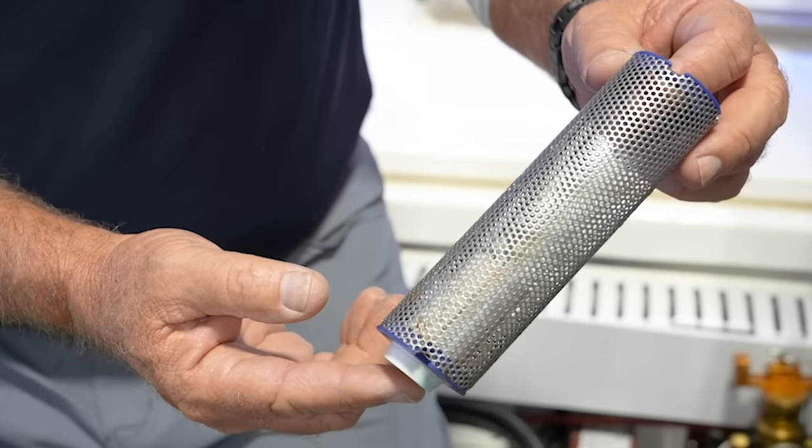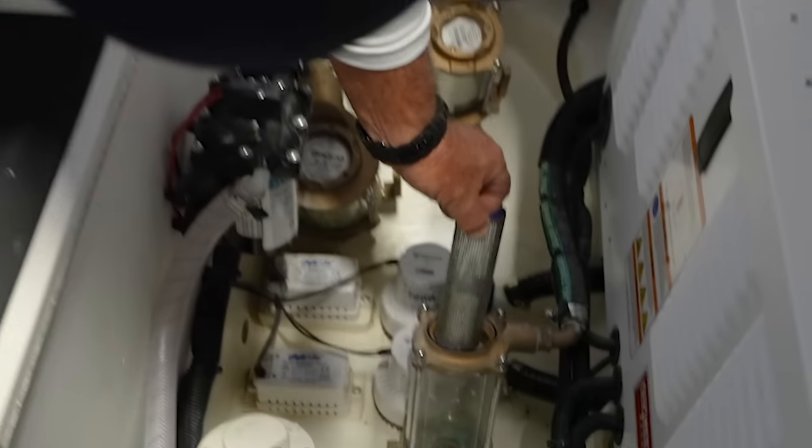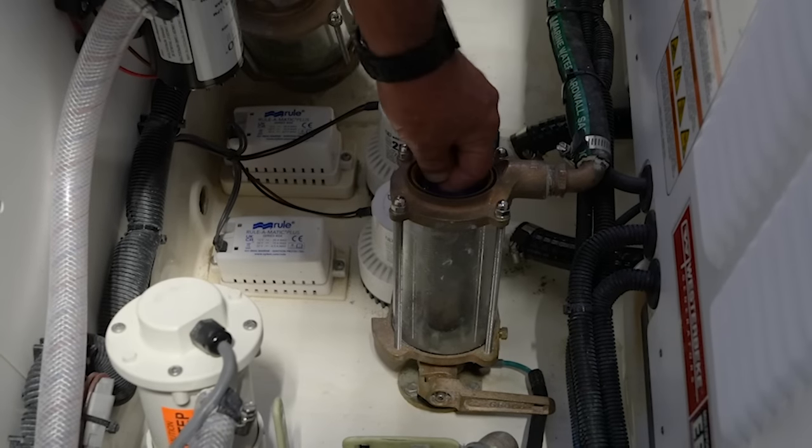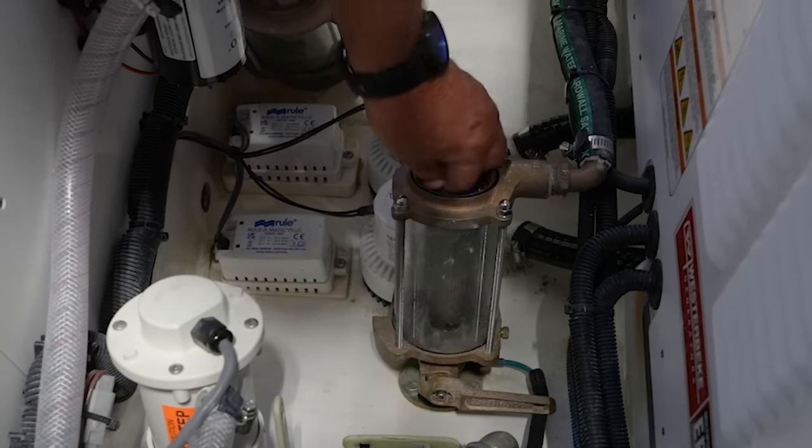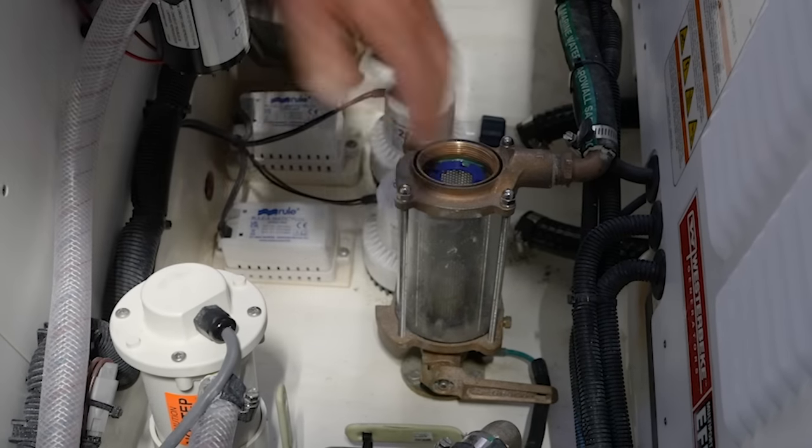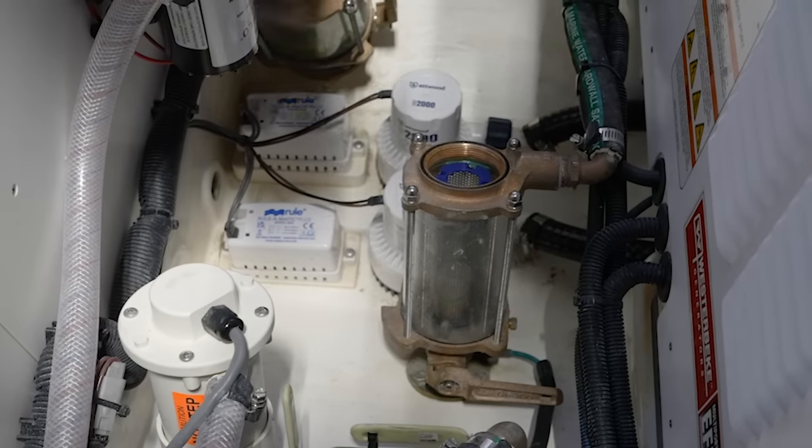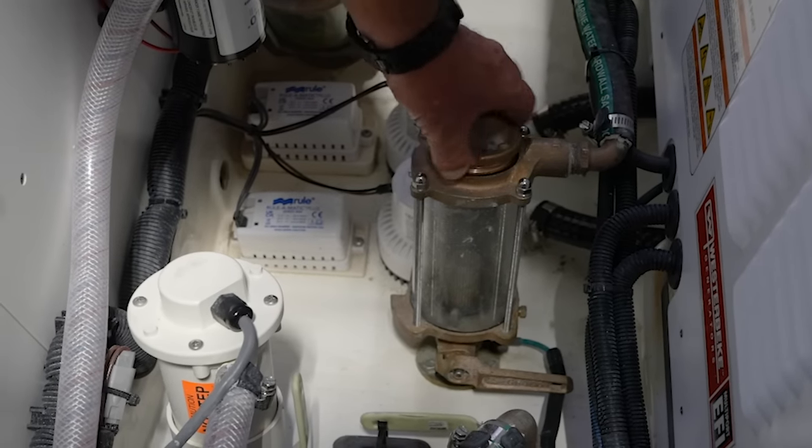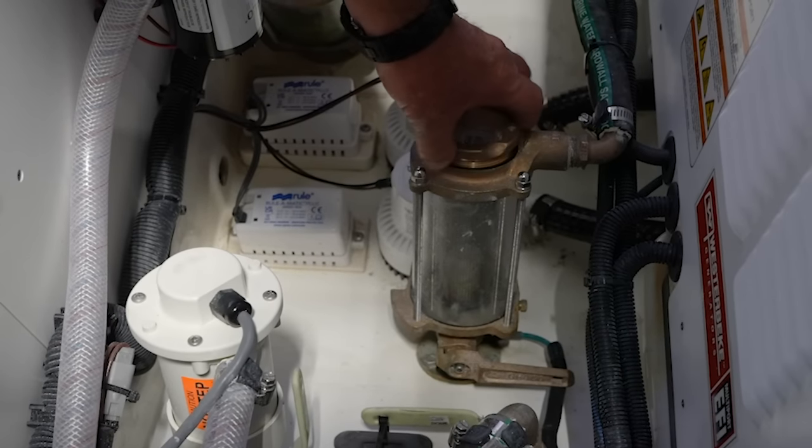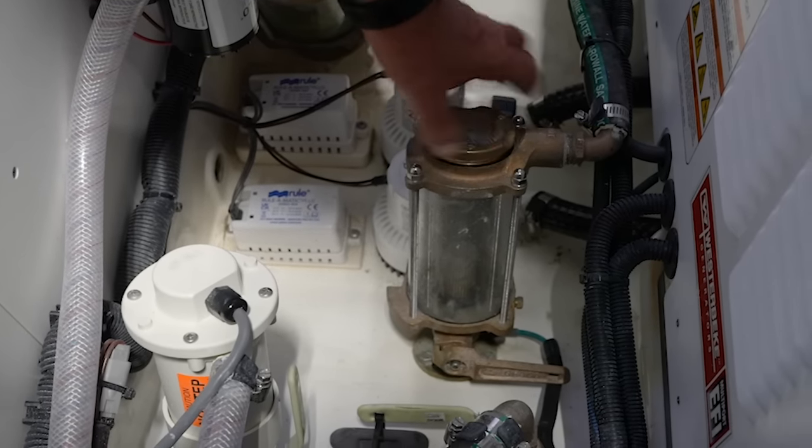You want to get it nice and clean again and then you want to put it back in and make sure she seats all the way back down in there. Get it in there snug like that and then you're gonna screw your lid back on and just kind of go hand tight with it and then if you get that spanner wrench you can give it an extra little snug.